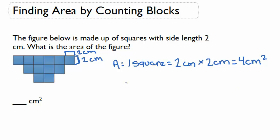Now that we know the area of 1 square, we need to figure out how many squares we have all together. Since we're finding the area by counting blocks, we're simply going to count how many of these squares we have.